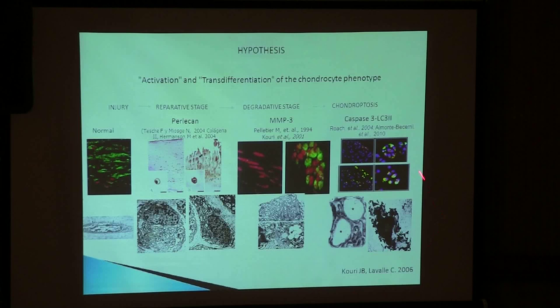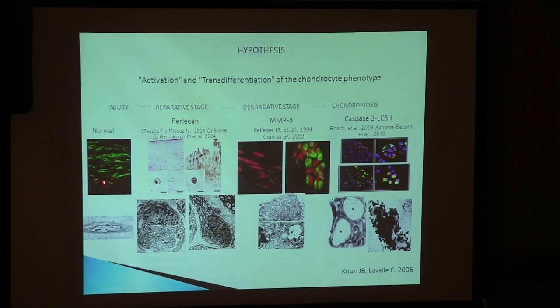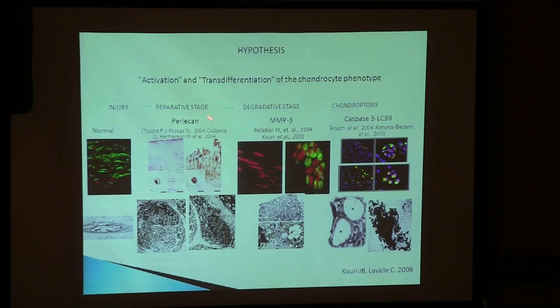Knowing all this differentiation of structure, we published with Dr. Lavalle, a rheumatologist — because we work in relation with hospitals and institutes of health — a hypothesis that we call activation and transdifferentiation of chondrocyte phenotype. That means the chondrocyte normally has its form, synthetic activity, and normal activity. But when there is an injury, there is a phase to try to repair, synthesizing and repairing molecules. This was published by Stach and other authors. The chondrocytes try to synthesize things to repair the problem.